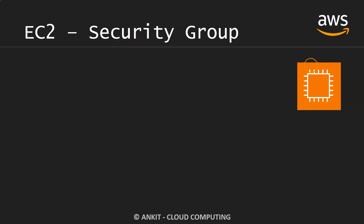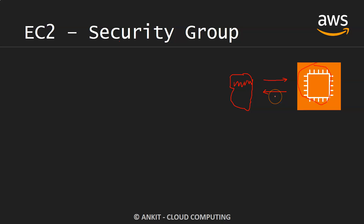Let's say you have some EC2 instance and in this EC2 instance you want to control some outbound traffic and inbound traffic — something like who can connect with your EC2 instance and with whom you can connect from your EC2 instance. This security group helps us define those rules.